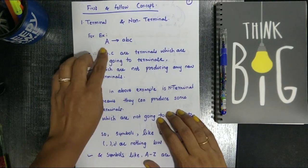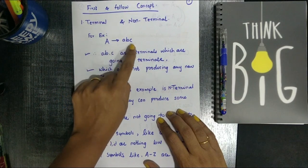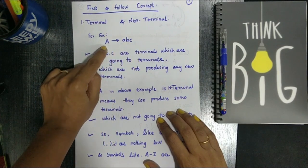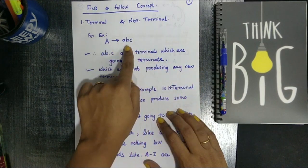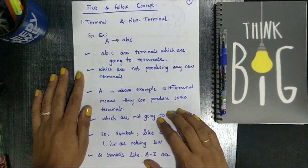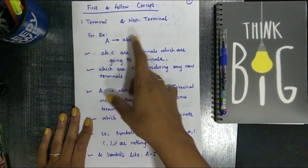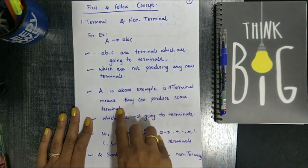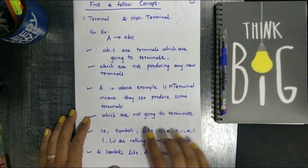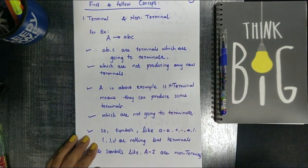In the above example, A tends to abc, where A is a non-terminal symbol — it is going to produce new values, that is 'abc'. The small 'abc' are the terminal symbols which are not going to produce new values. So terminals are symbols which end the string, while a non-terminal like A can produce some new terminals and continues in a continuing fashion.